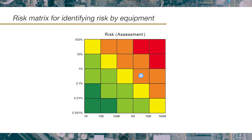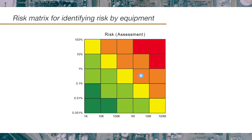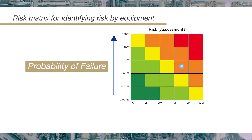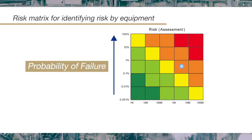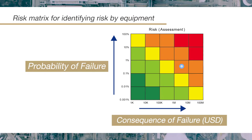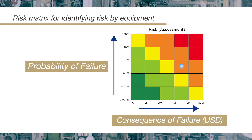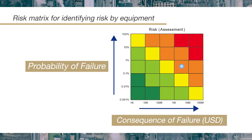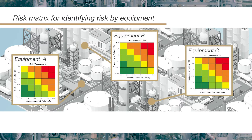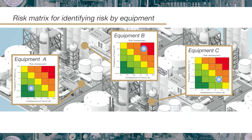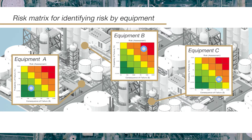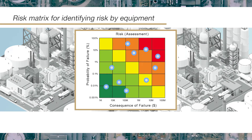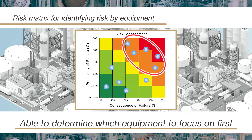The risk for each piece of equipment is visualized using a risk matrix. The vertical axis shows the probability of failure, and the horizontal axis shows the resulting financial consequences in the event of failure. A risk matrix visualizes clearly how much risk each equipment is currently exposed to, making it easy to prioritize which equipment should be handled first.